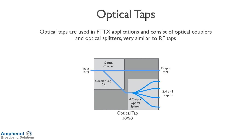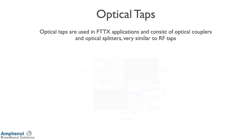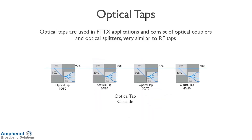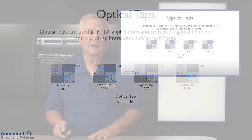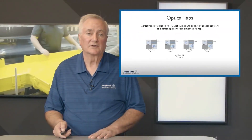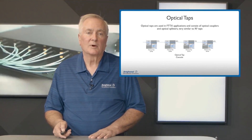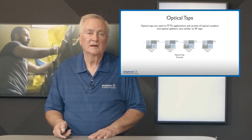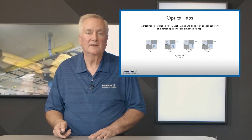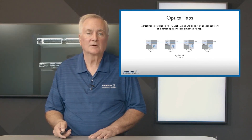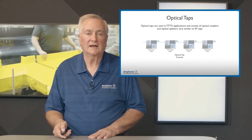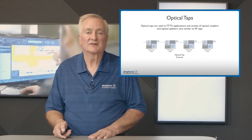In this example we're looking at 80-20: 100% in, 80% on the output, and 20% feeding down to the four-way splitter. These are very similar to RF taps and would be used up in the air on the street, underground, or in backyard easements. We'd have the fiber optic input at one pole, feed the next pole, and cascade from 90-10, to 80-20, to 70-30, and 60-40.